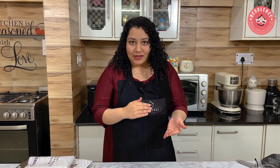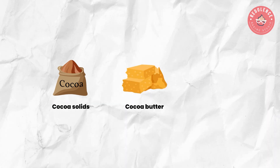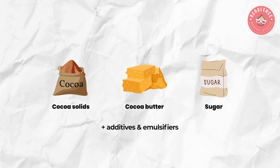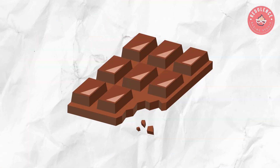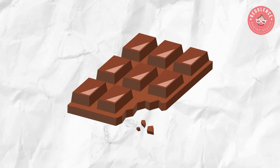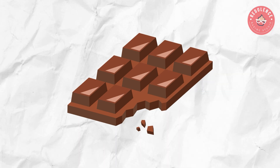This is further processed by grinding it a lot with sugar, additives, and emulsifiers to make our chocolate. Let's talk about chocolate for a bit now.